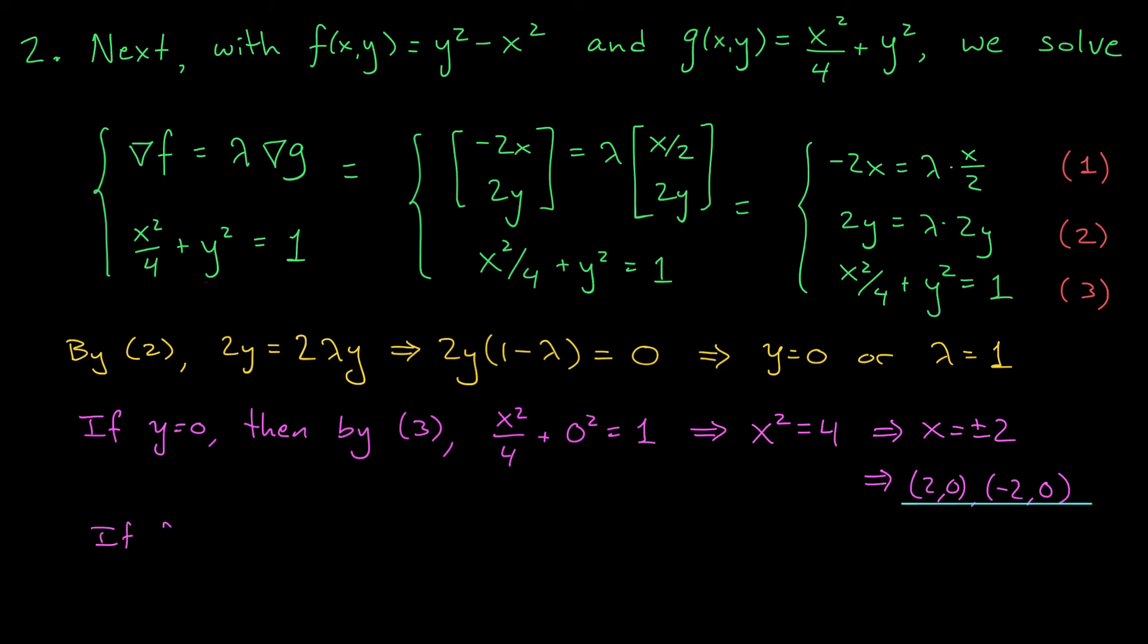We haven't yet explored the possibility that lambda is equal to 1. If lambda is 1, well, then I think we should probably use our first equation. That's the only other equation that has a lambda in it. By 1, we have minus 2x equals x over 2. From here, it's not too hard to see that the only possibility for x is x equals 0. Well, once we know x, we can again use equation 3 to get y.